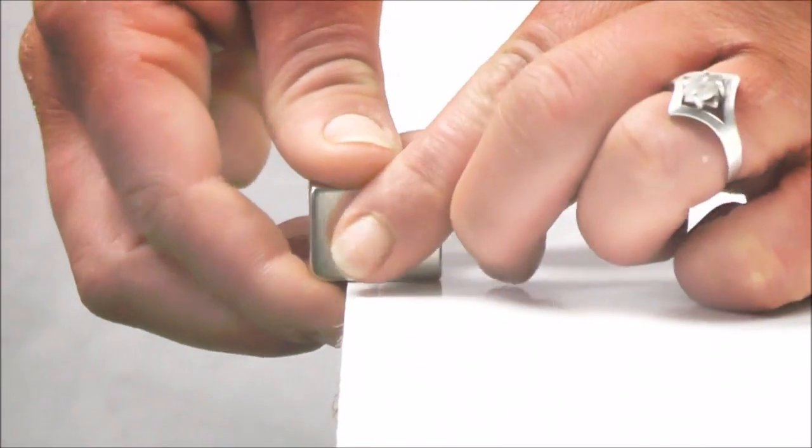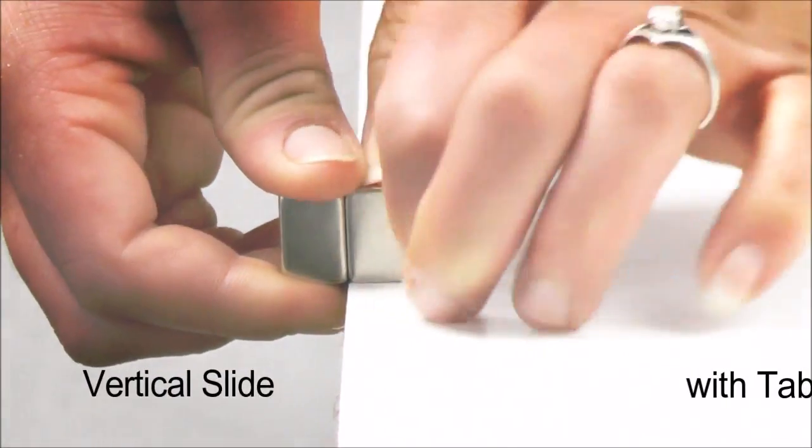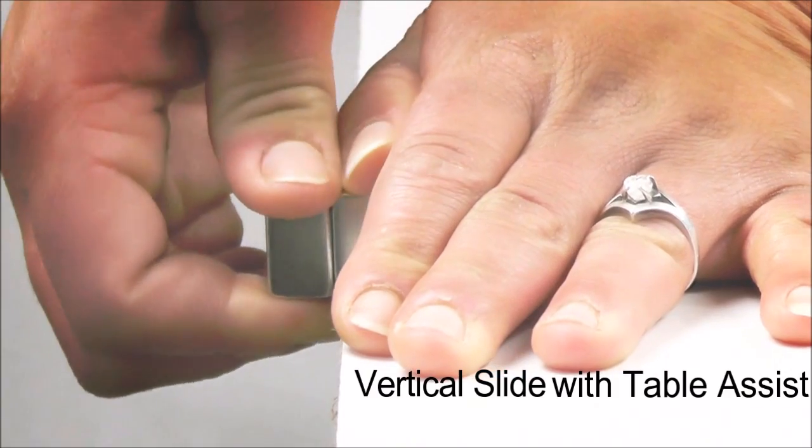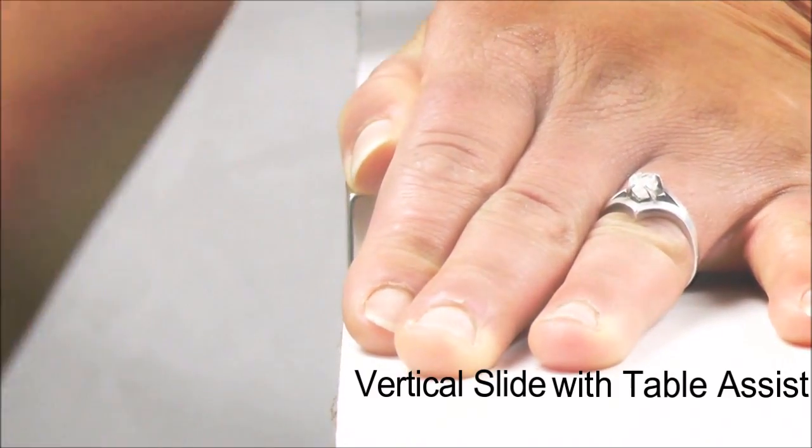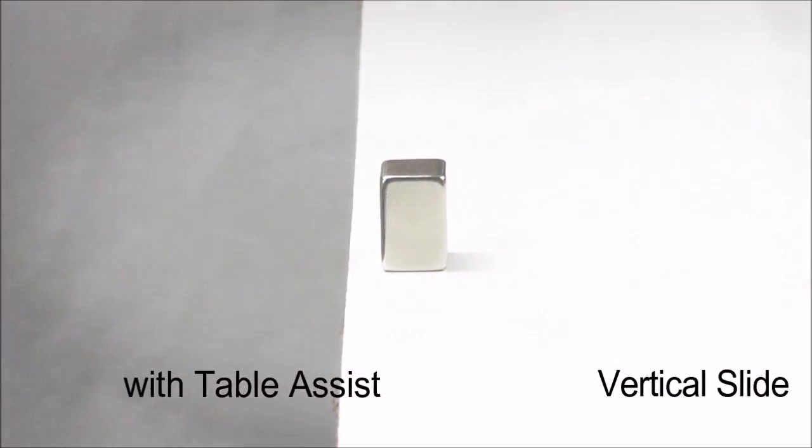For slightly larger or more difficult magnets, try a vertical slide using the edge of a table to hold one magnet in place while pushing down on the magnet overhanging the table.